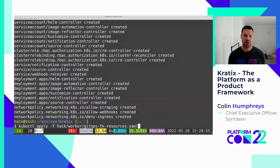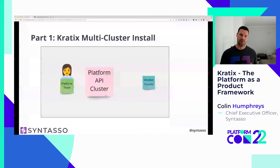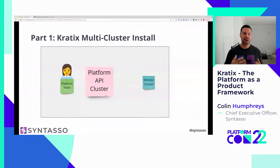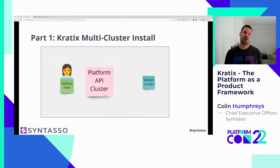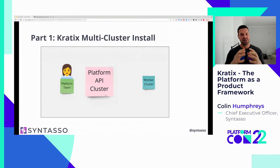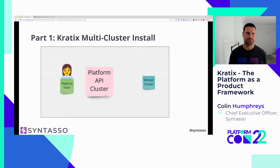We've got Kratix installed and our multiple Kubernetes clusters set up, but we don't have a platform as a product yet. What we need to do is take a promise — something we want to offer as a service to our application teams — build that as a promise, and install it into our platform API cluster.